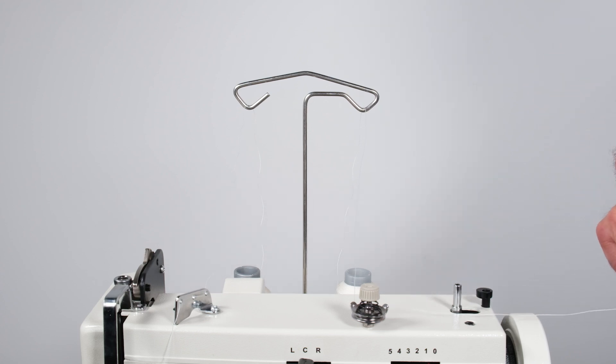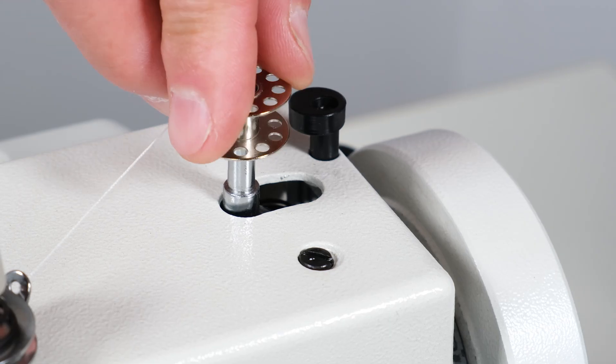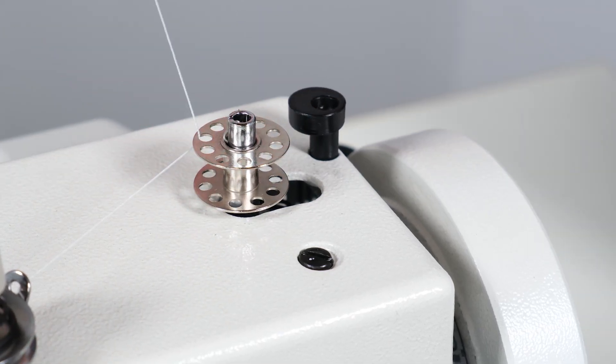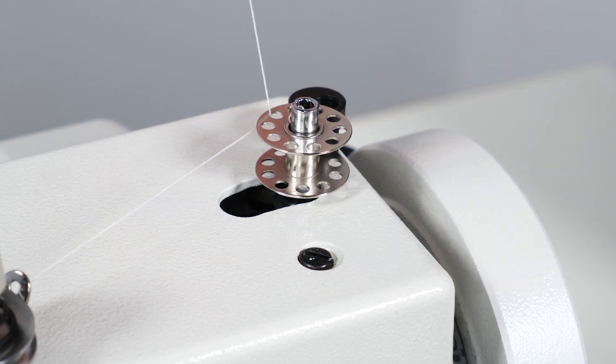Now I'm going to bring my thread through one of the holes of the bobbin, push the bobbin onto the spindle, pull the spindle forward to activate the bobbin winder.